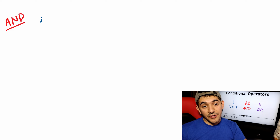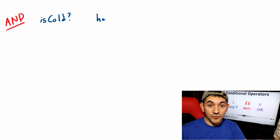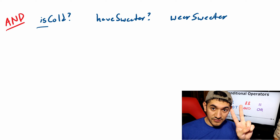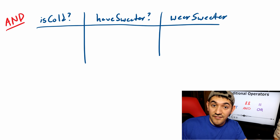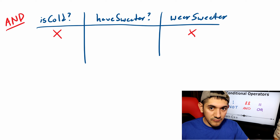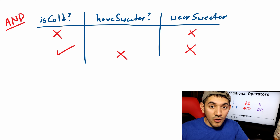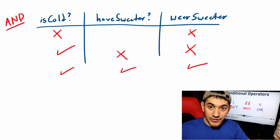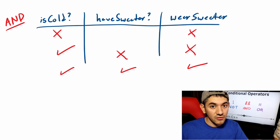Let's take an example: should I wear a sweater? That decision comes down to two conditions — is it cold outside, and do I have a sweater? Both conditions have to be met, meaning both have to be true, in order for me to wear a sweater. If it's not cold outside, it is false that I will wear a sweater. If it is cold outside but I don't have a sweater, it is also false. When will I wear a sweater? When both conditions are true. In an and operation, the result will always be false unless both conditions are true.